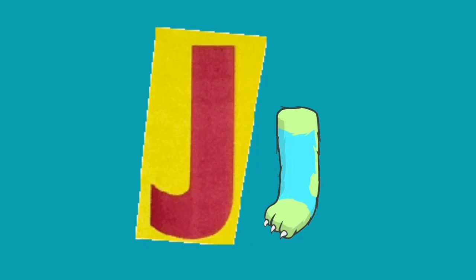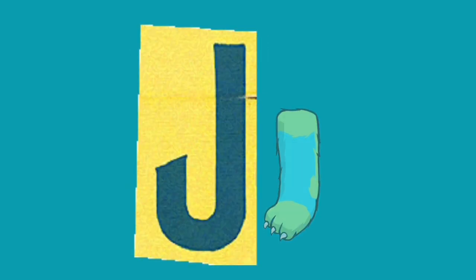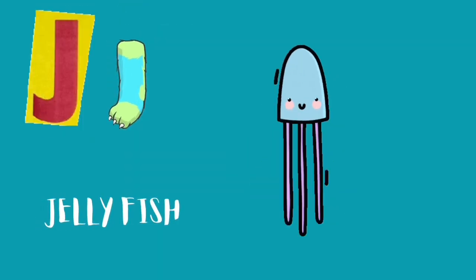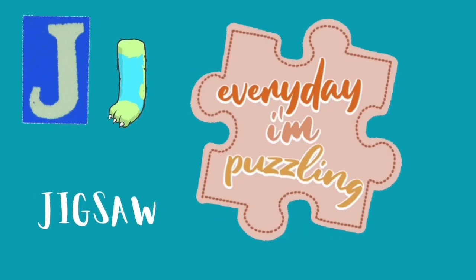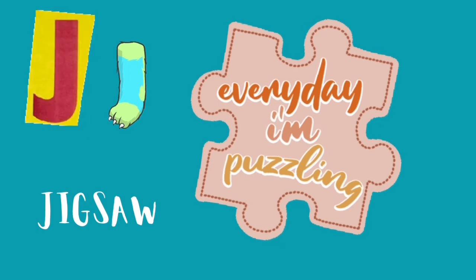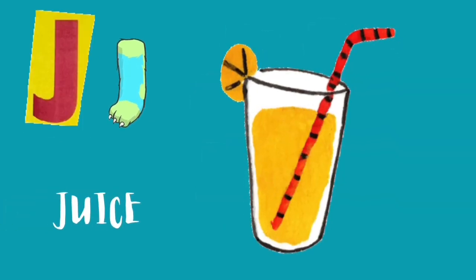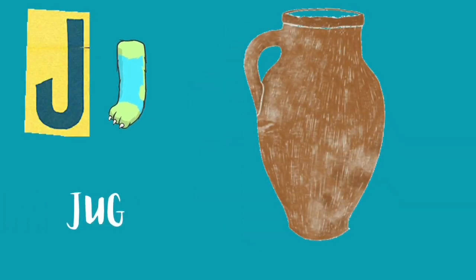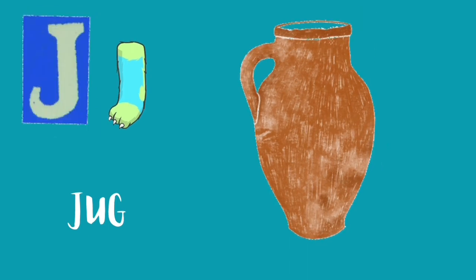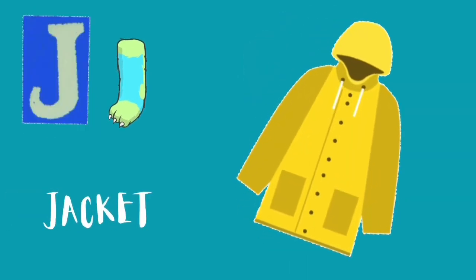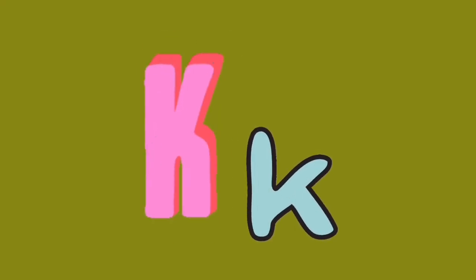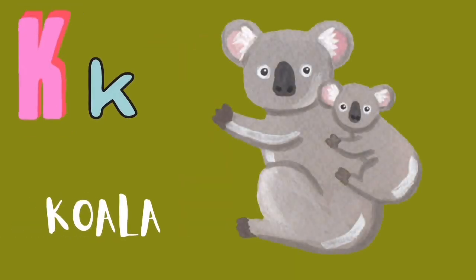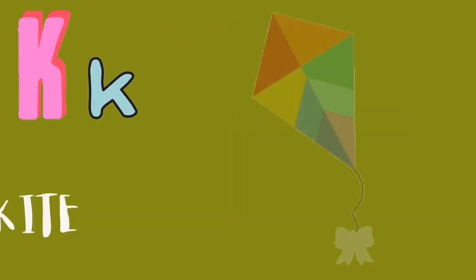J: jellyfish, jam, jigsaw, juice, jug, jacket. K: koala, kite.